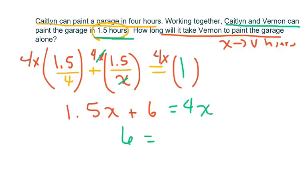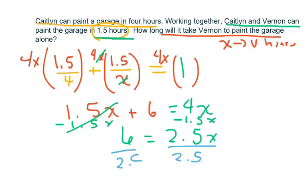Now, simplifying, we get 6 equals 2.5X. I subtracted 1.5 from each piece here. That cancels. And then divide both sides by 2.5. And we're gonna get 2.4 hours to complete.